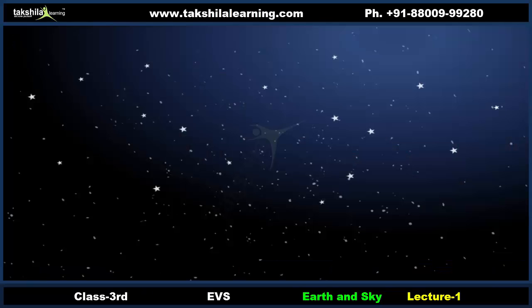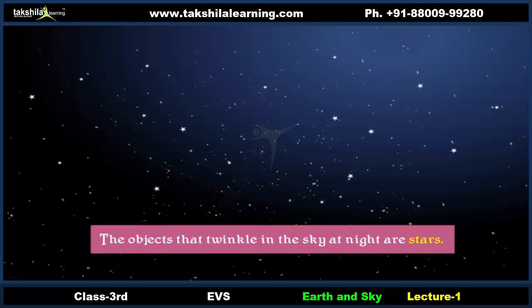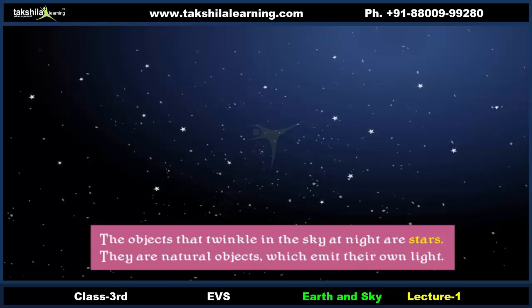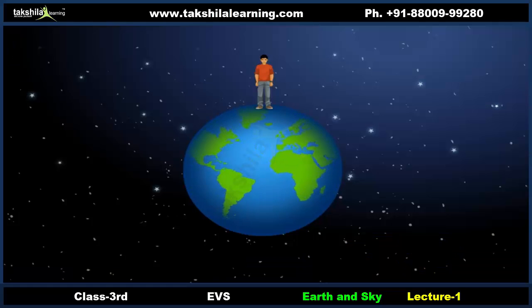The objects that twinkle in the sky at night are stars. They are natural objects which emit their own light. The Sun is also a star.